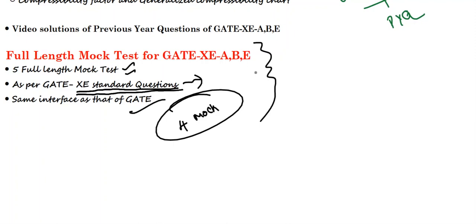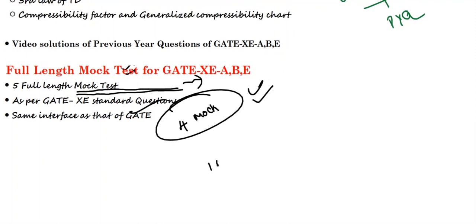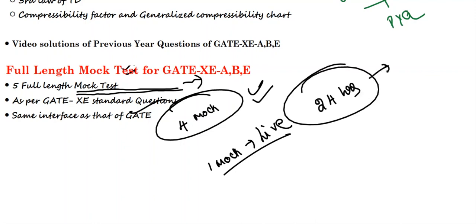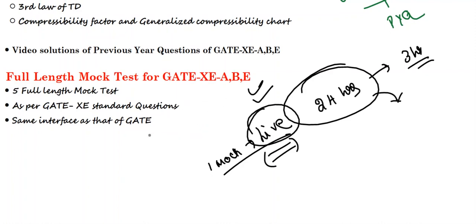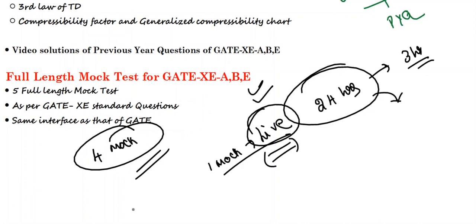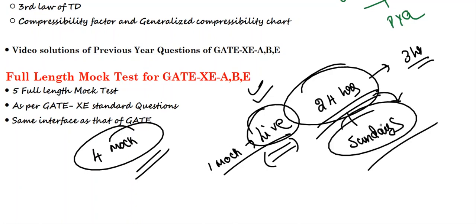The timetable has already been released — you can check our website. Four mock tests can be written at any time. The last one mock test is a live test, where everyone should write within a limited period — you will be given 24 hours. In those 24 hours, you can choose any three hours to write the test, and the result will be scheduled for the next day. The live test is kept to check how many students are writing and competing for the GATE XC exam. This final live mock test will be on a Sunday, considering students who are working and preparing.